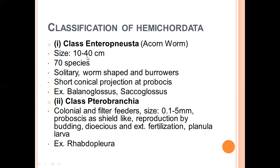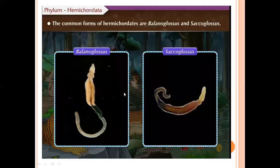Enteropneusta members are called acorn worms. They are called acorn worms because the shape of their proboscis resembles the fruit of an acorn. Size is 10 to 40 cm, there are 70 species, they have a worm-like shape, burrow in sediment, and have a short conical projection at the proboscis. Examples include Balanoglossus and Saccoglossus.